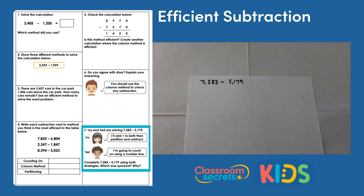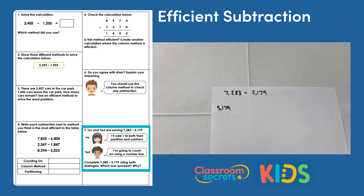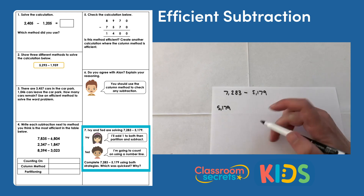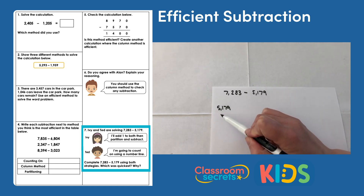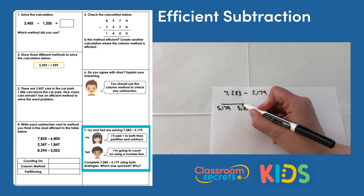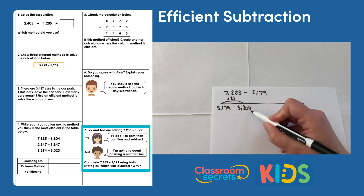Question seven: Ivy and Ted are solving 7,283 subtract 5,179. Ivy says she'll add one to both numbers, then partition and subtract. Ted says he's going to count on using a number line. I'll start with Ted's method, counting on from 5,179 to 7,283. My first step is to get to 5,200, so my first jump adds 21.